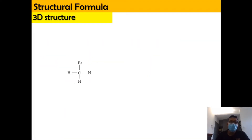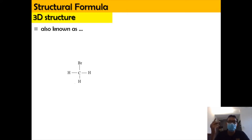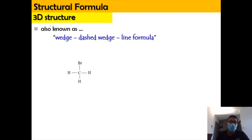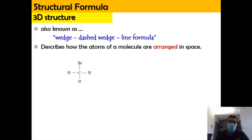Now, we're going to learn how to draw the structural formula based on the 3D structure. Before this, for the expanded, condensed, and skeletal structure, we drew them in terms of 2D formula. But now we're going to learn how to draw them in 3D form, where this structure is known as the wedge-dash line formula. It basically describes how the atoms of a molecule are arranged in space.